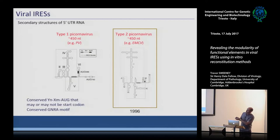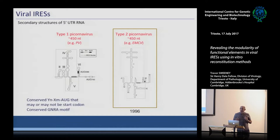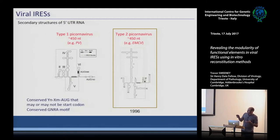In the case of type 1 IRESs, this AUG is typically not the start codon, and the actual start codon can be up to 100 or more nucleotides downstream from where the IRES is. In contrast, for type 2 IRESs, this AUG typically is the actual start codon for the virus. Apart from that, there's very little conservation between the two.